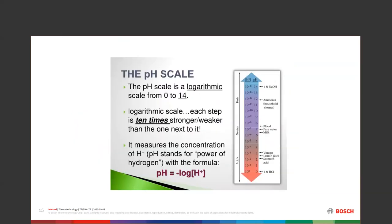We go by tenths of a point — 7.2, 7.4, 7.6 — and those count, again with ten times the effect per unit. Household cleaners and ammonia are in the pH 12 region; pure water is 7; milk is slightly acidic. We only want water in the boiler — not vinegar, lemon juice, or stomach acid at pH 2. Hydrochloric acid is a zero, as acidic as it gets.